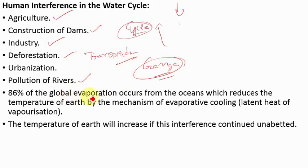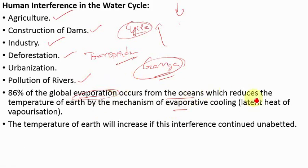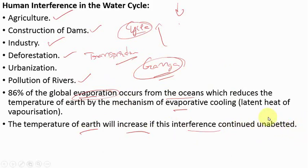Evaporation has a very important role in reducing the temperature of our earth. 86% of global evaporation takes place in oceans, which reduces the temperature of the earth through the mechanism of evaporative cooling. If we disrupt the water cycle and this evaporation does not take place, the earth will warm up, leading to climate change. So we must take measures to reduce our interference in the water cycle.